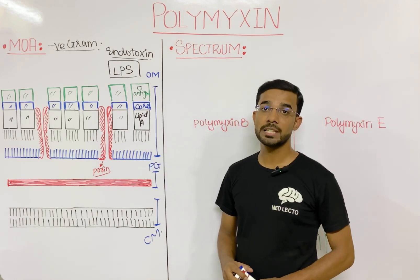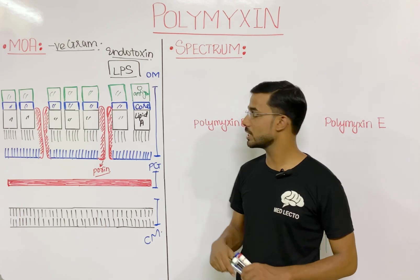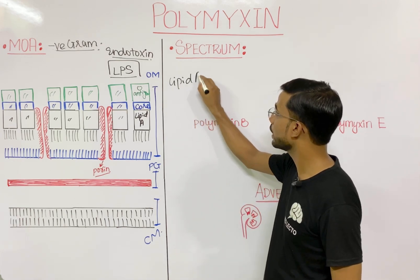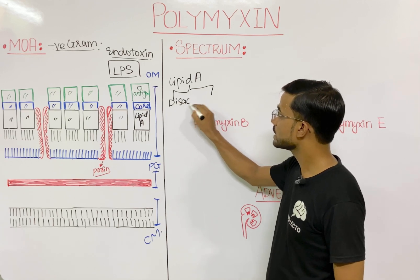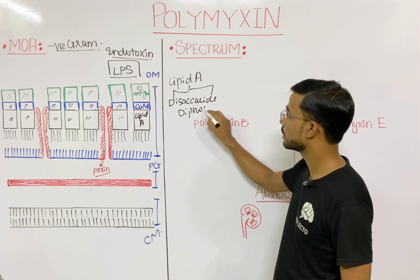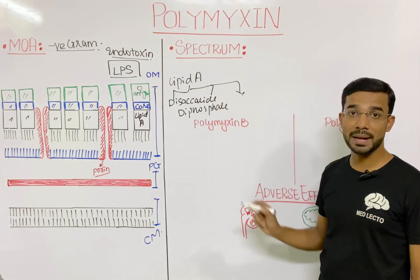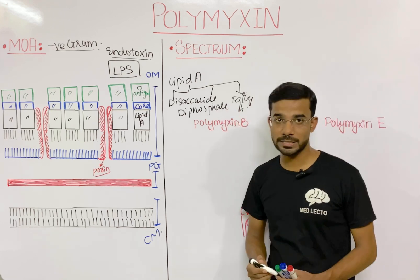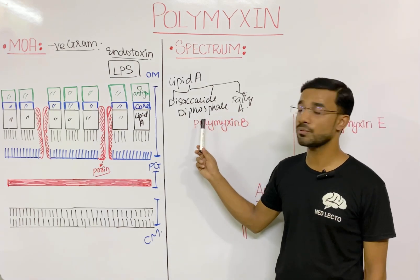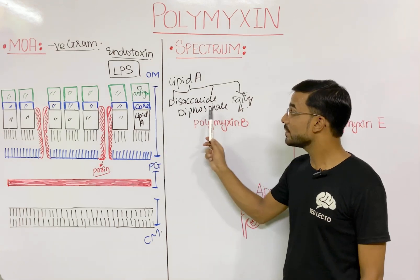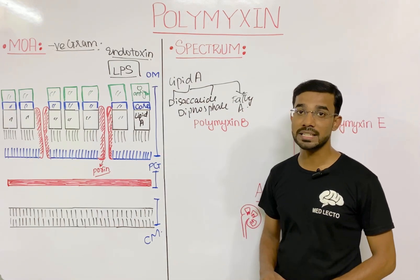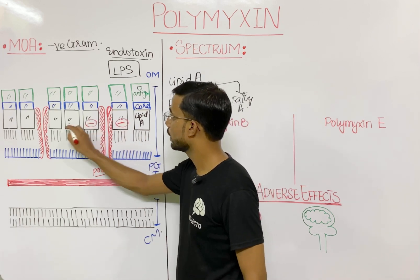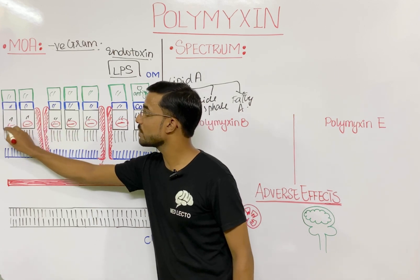In the lipid A component, you will see the presence of phosphate. The lipid A component contains two things: first is the disaccharide diphosphate, and the next is the fatty acid. This phosphate present in the lipid A component carries a negative charge, so negative charge is present in the lipid A component.